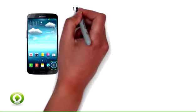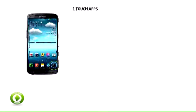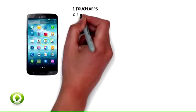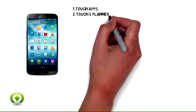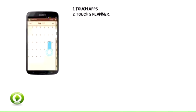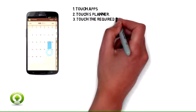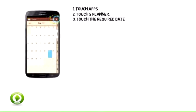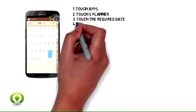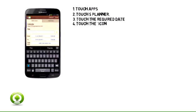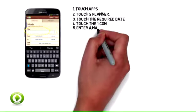1. Touch Apps. 2. Touch S Planner. 3. Touch the required date. 4. Touch the plus icon. 5. Enter a name for the event.